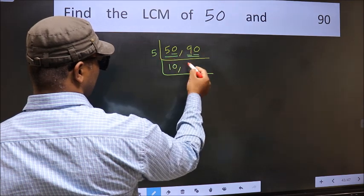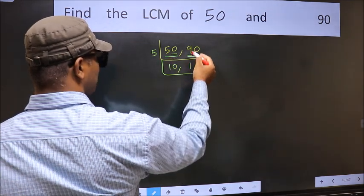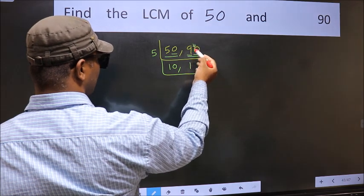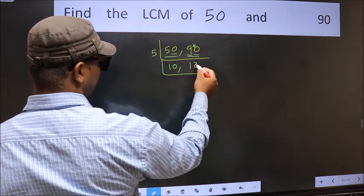First number 9. A number close to 9 in 5 table is 5 once 5. 9 minus 5 is 4, 4 carried forward 40. When do we get 40 in 5 table? 5 eights 40.